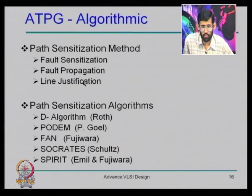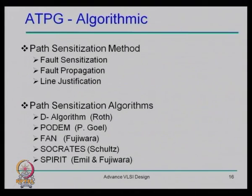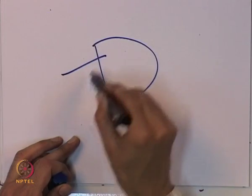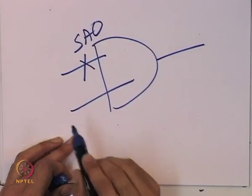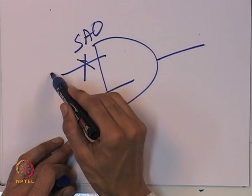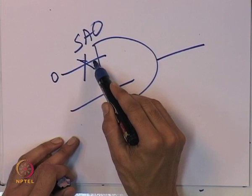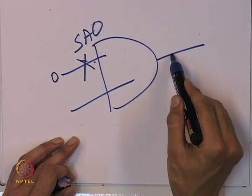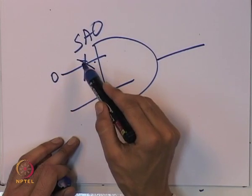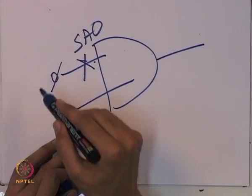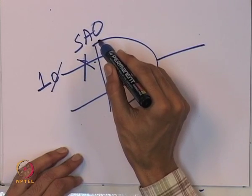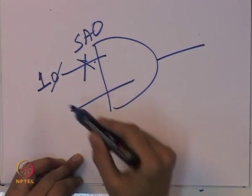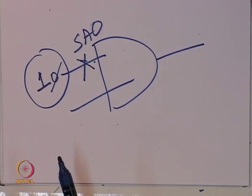Fault sensitization means you sensitize the fault — for a stuck-at-0 fault at a line, you must apply value 1 (the opposite) to excite it. If you apply 0, the circuit can never produce a different value under faulty vs. fault-free conditions. The sensitization condition is to apply the opposite value to the fault. This is essentially a line justification problem.